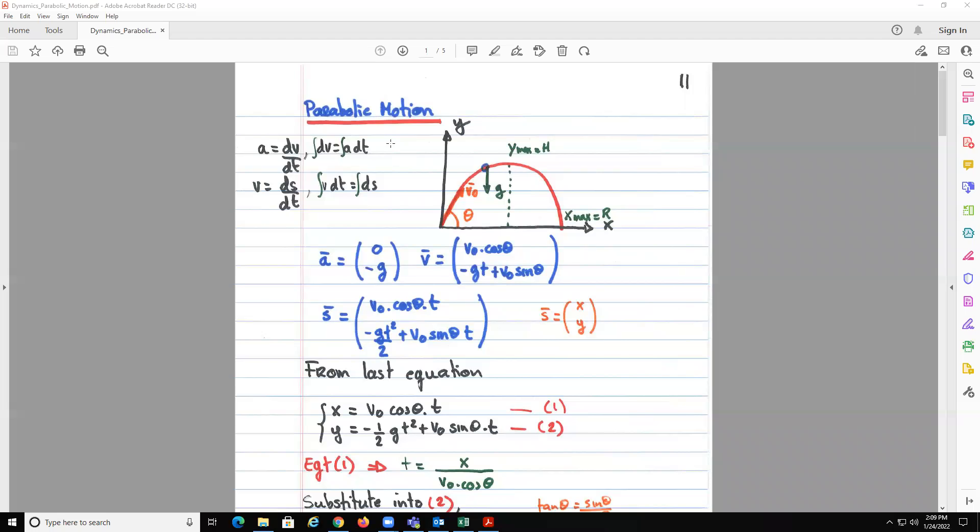Okay, so in this video we're going to look at the parabolic motion, and here just recalling the two kinematics equations. A equal dv dt, so if we integrate, we separate the variables, we get dv equal a dt, meaning that v would be equal to the integral of a dt.